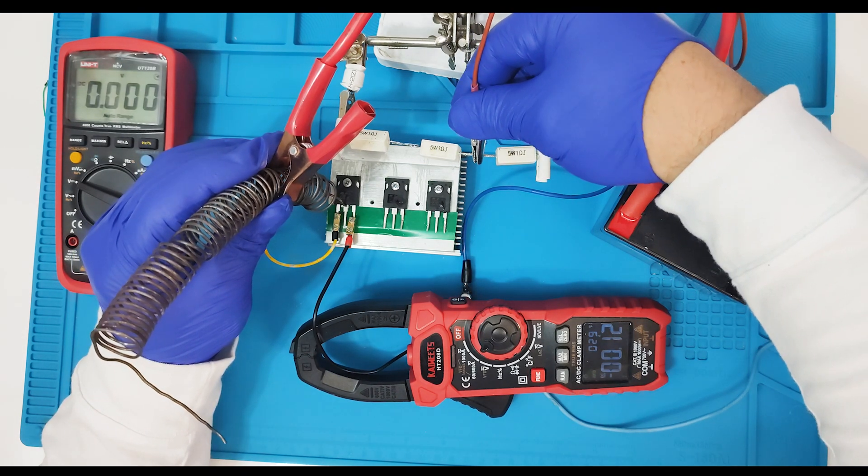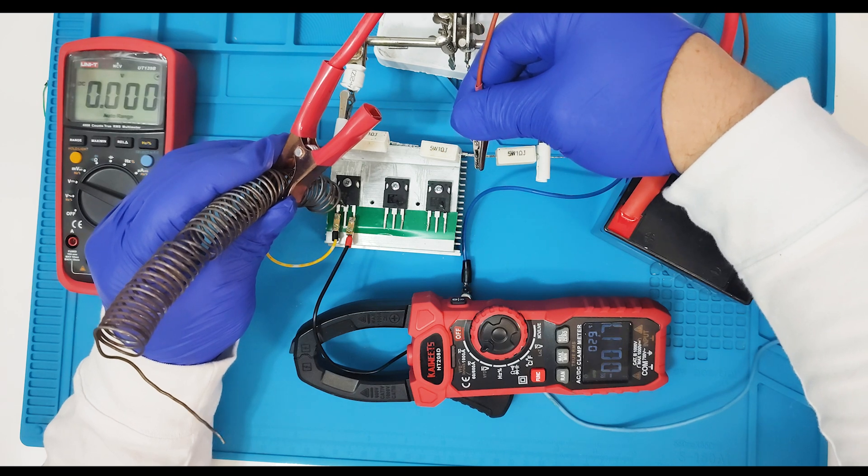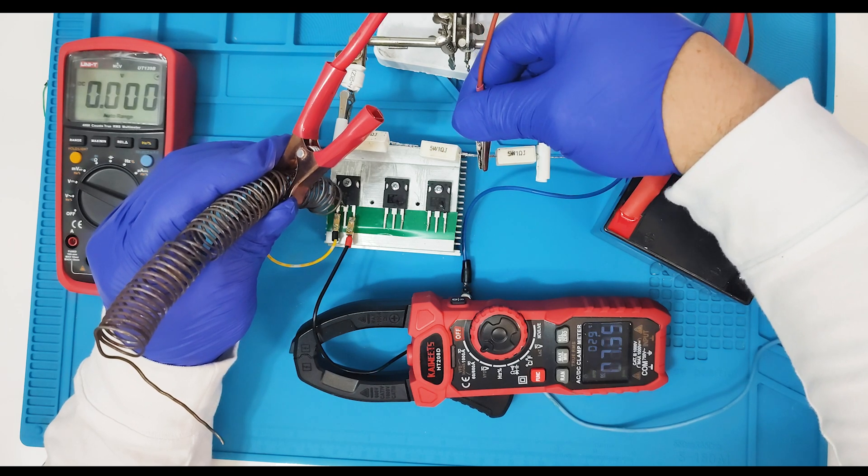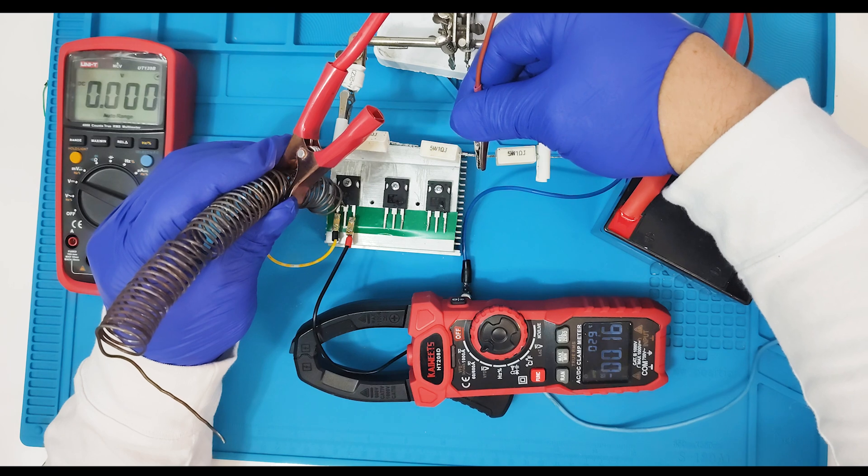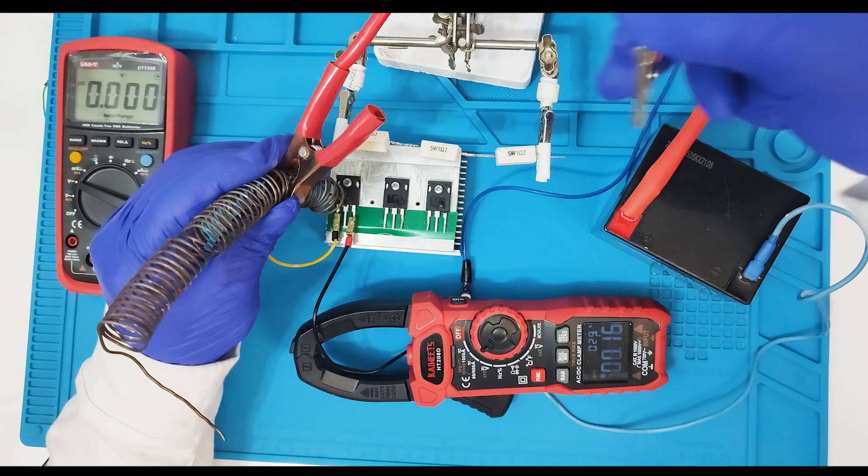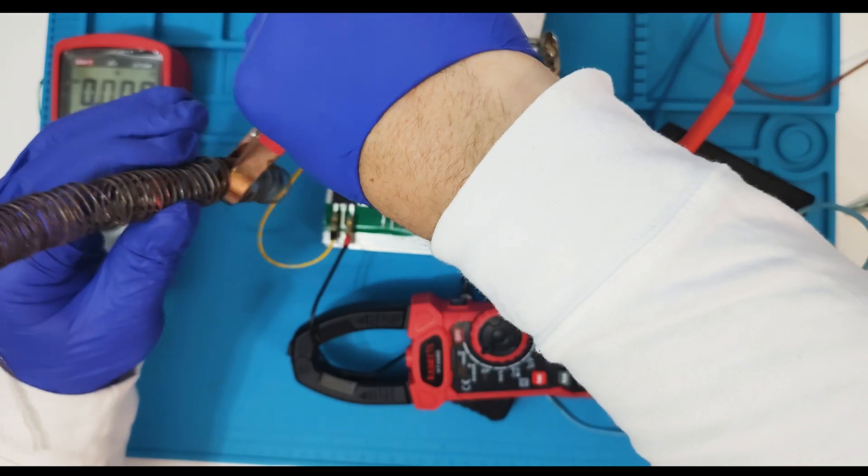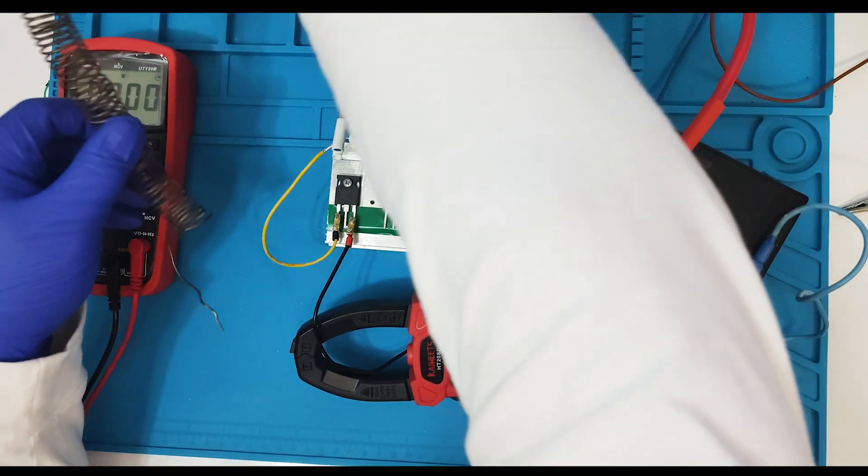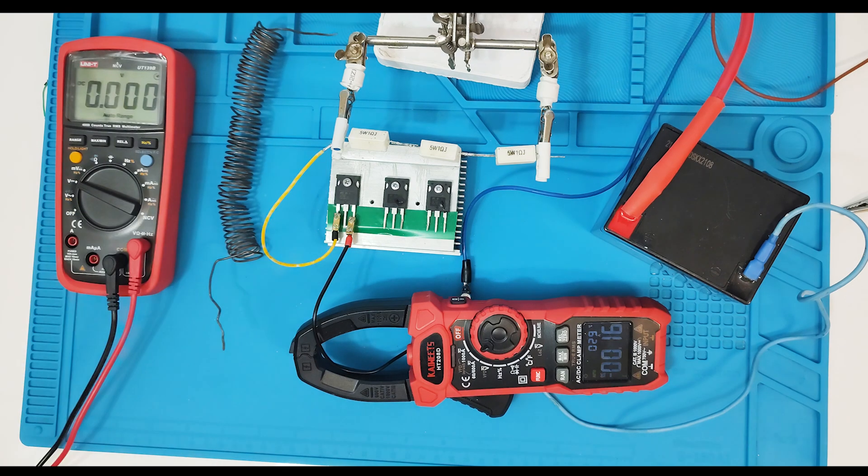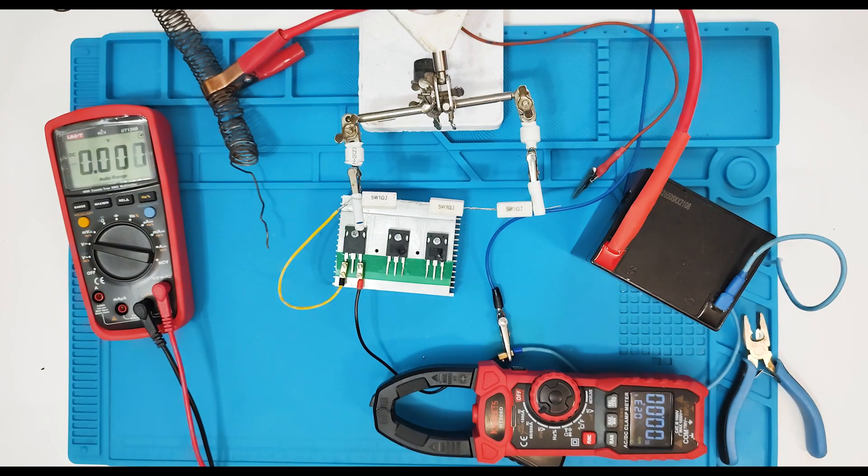And we can see that 31 A we can get from this emitter. That means that collector can conduct 26 amperes. That's really, really good. I think this transistor is very reliable and absolutely safe. And we can use it in any of our devices.